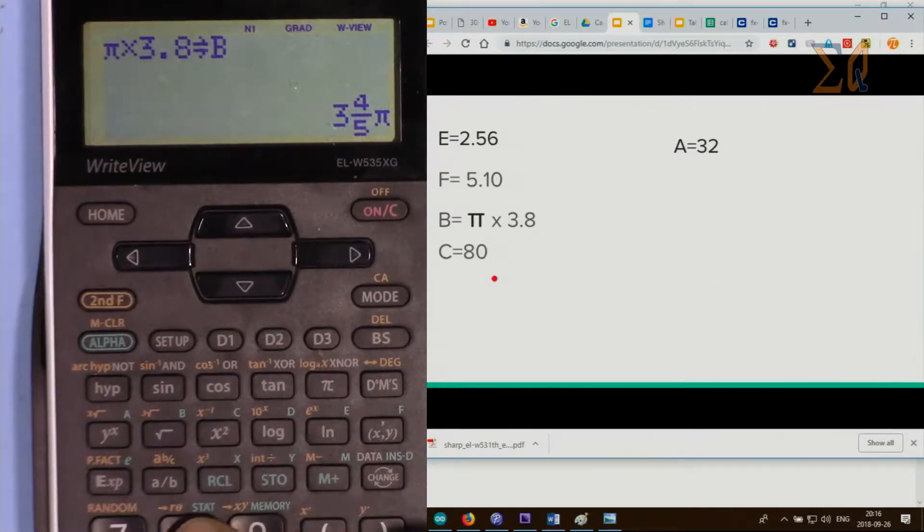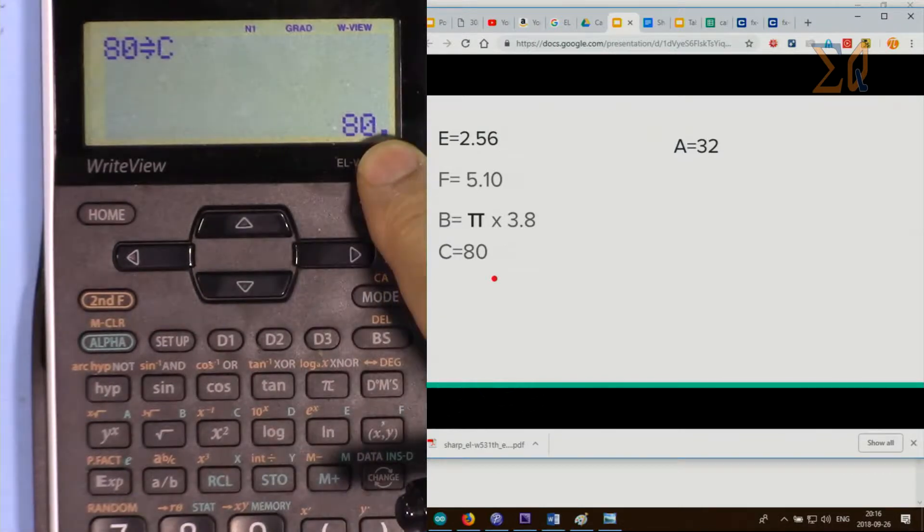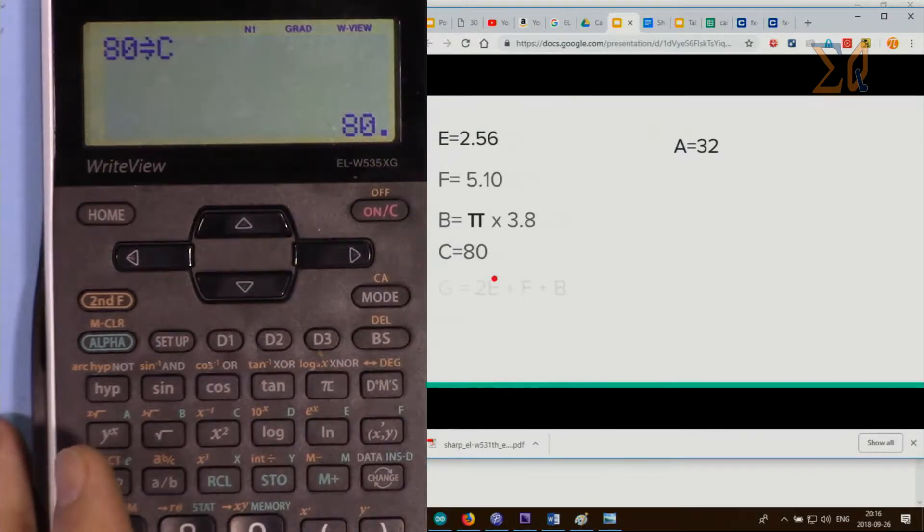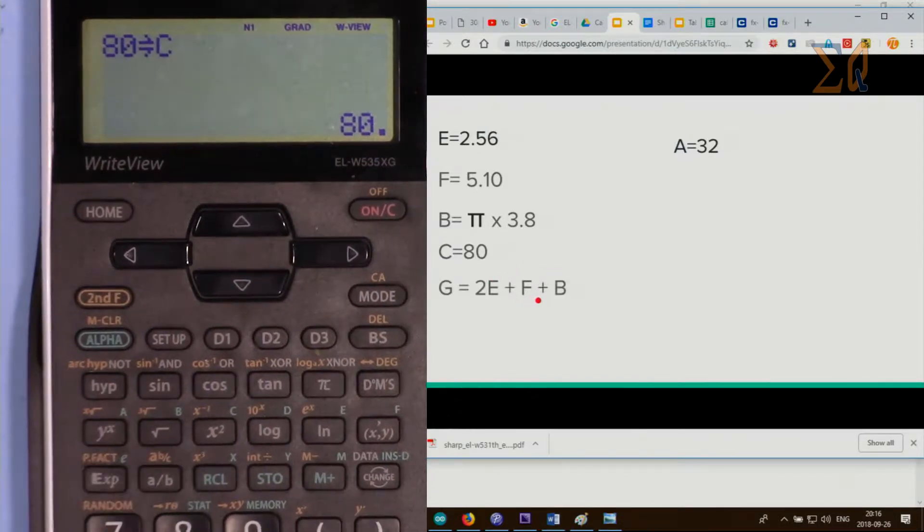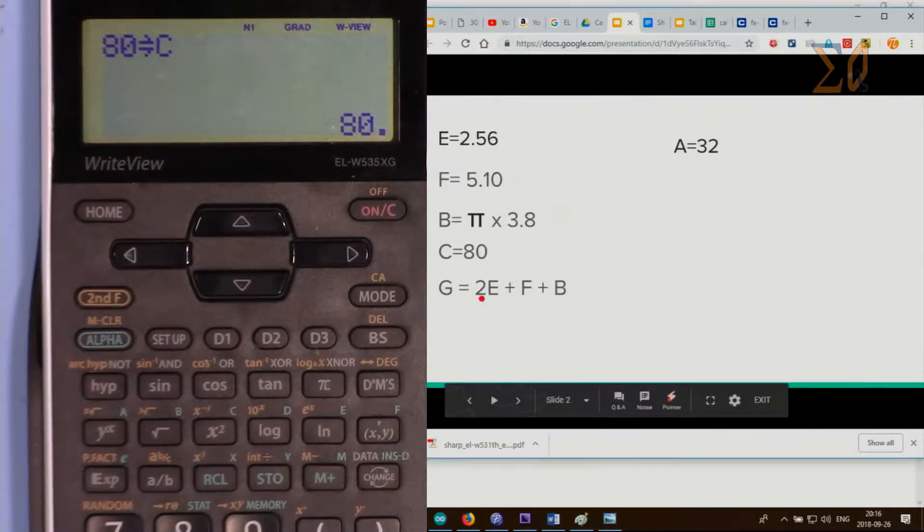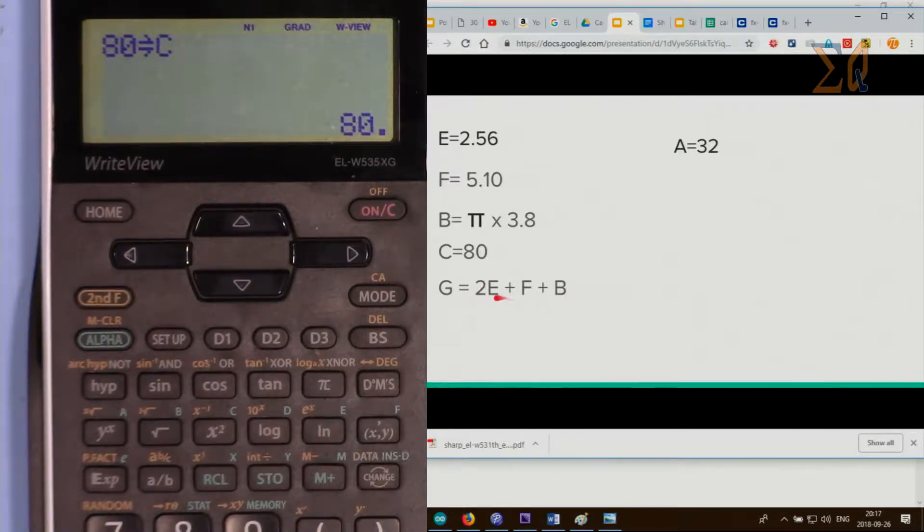Now put 80 into C: 80, store C. We don't have G, but I'm just saying you can do that. Now for the calculation, let's say you want to have 2E plus F plus B. The result of this, let's call it G. Let's do the calculation.